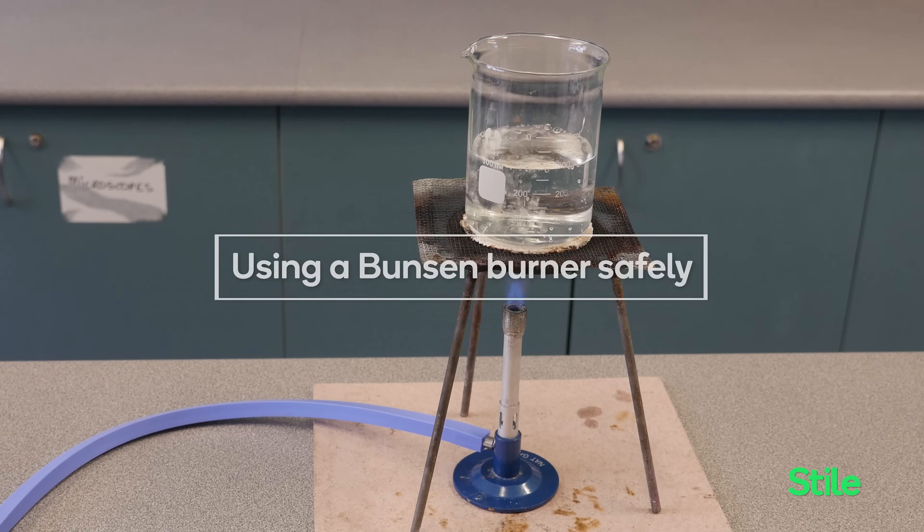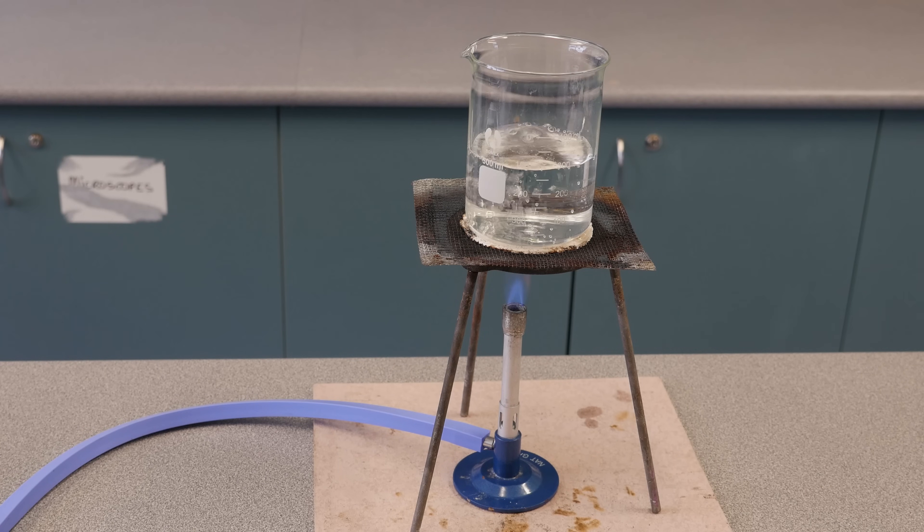The Bunsen burner is a great way of heating up substances in a controlled way, but it must be used with care. A handy way of remembering how to light a Bunsen burner safely is SET ALIGHT. Let's see what this means.